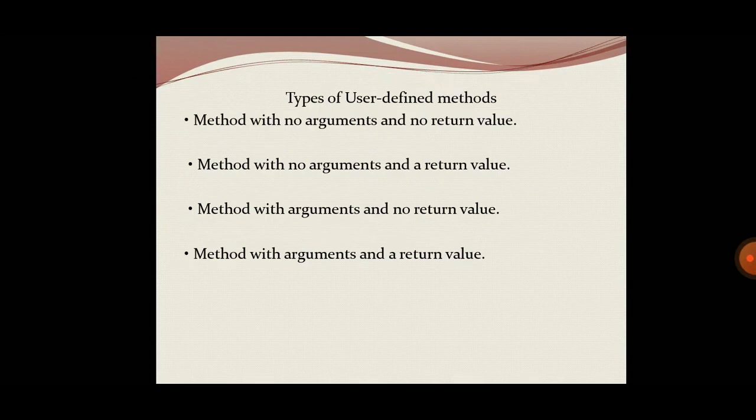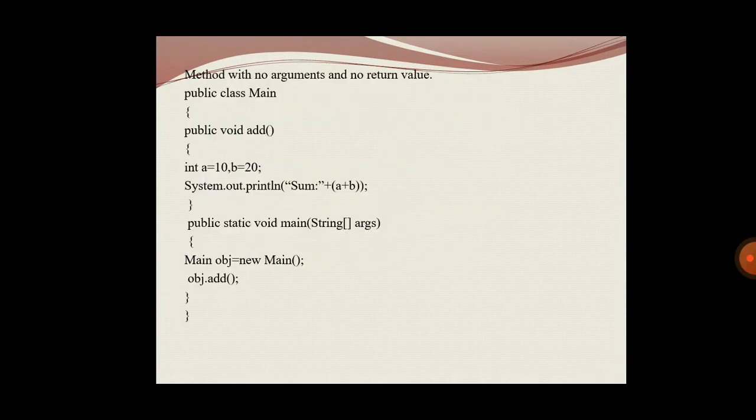There are different types of user-defined methods. First, method with no argument and no return type. Second, method with no argument and with return type. Third, method with argument and no return type. Fourth, method with argument and with return type.